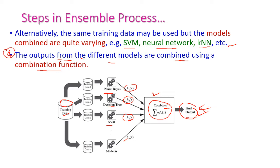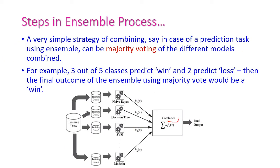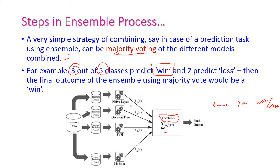For combining outputs, the most popular method is majority voting. For example, consider predicting a cricket team winning or losing. If we use five learning methods and three predict the team will win while two predict it will lose, the majority is three, so the output declares the team will win the match. This is called the majority voting method.